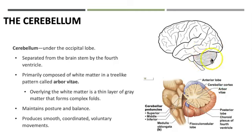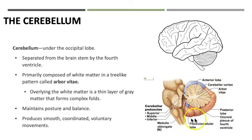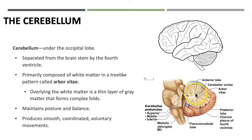The cerebellum, our 'little brain,' is found in the back of the brain just underneath the occipital lobe, separated from the brainstem by the fourth ventricle. When we look at the cerebellum, it is made up primarily of white matter that extends outward, with gray matter at the ends creating an almost tree-like effect — this area of white matter is known as arborvitae, which translates to 'tree of life.' The cerebellum's main role is to maintain posture and balance, and it works along with the basal nuclei to smooth and coordinate voluntary movements.